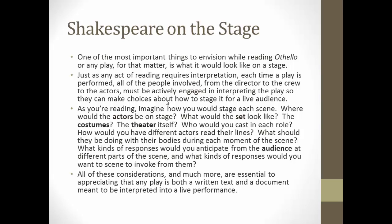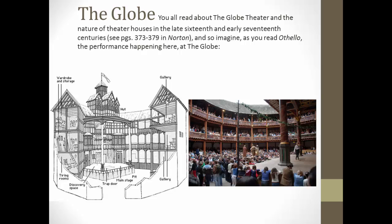There's a lot of choices that you have to make when you're performing something on the stage. All of these considerations and much more are essential to appreciating that any play is both a written text and a document meant to be interpreted into a live performance. So with that in mind, you read about the Globe Theater and the nature of theater houses in the late 16th and early 17th centuries in Norton. And so you should imagine, as you read Othello, the performance happening at the Globe.